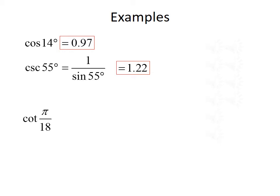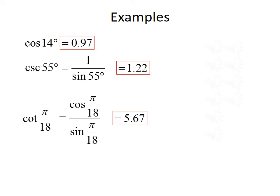Next, we deal with the cotangent of pi over 18. Since there is no degree symbol, we're working in radians, so the calculator needs to be in radian mode. Cotangent is cosine over sine, so we evaluate the cosine of pi over 18 divided by the sine of pi over 18, which gives approximately 5.67. Finally, we evaluate the tangent of 1. Even though this may look like degrees, without the degree symbol this is in radians. In radian mode, the tangent of 1 is approximately 1.58.